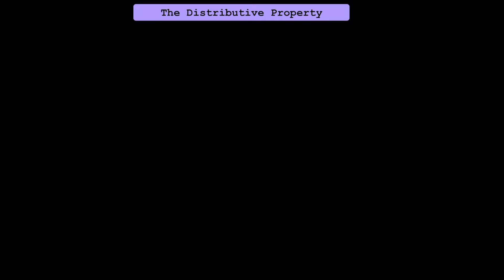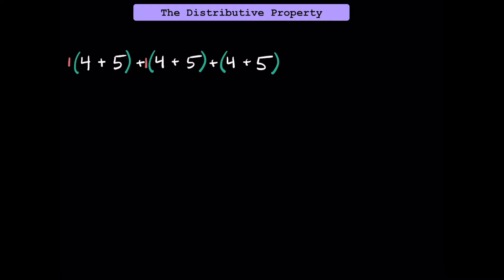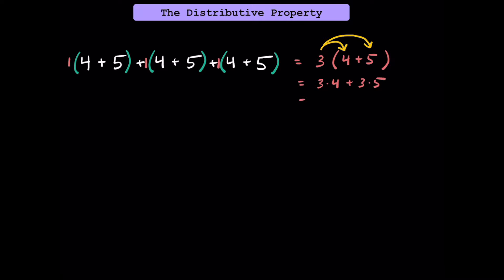Now let's take our understanding of repeated addition and the distributive property to more complicated expressions. Notice that we have 4 plus 5 one time, then a second time, then a third time — three of these 4 plus 5s — so we can rewrite this as 3 times 4 plus 5. Using the distributive property, we can see we have three 4s and three 5s, which we rewrite as 3 times 4 plus 3 times 5. That gives us 12 plus 15, or 27. You could also use the order of operations, adding 4 plus 5 to get 9 and multiplying by 3, but the purpose here is to practice the distributive property.